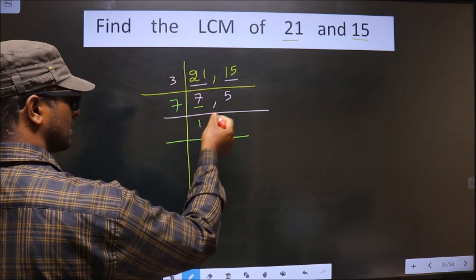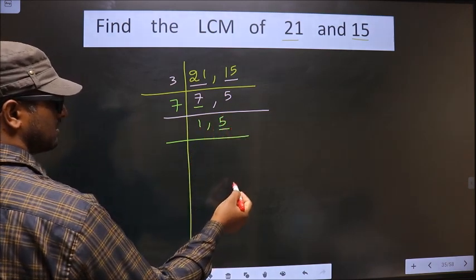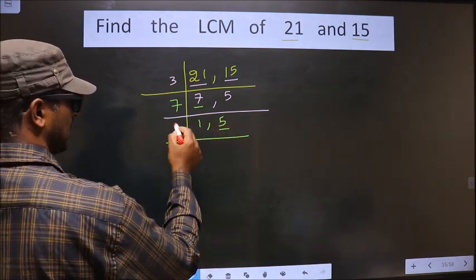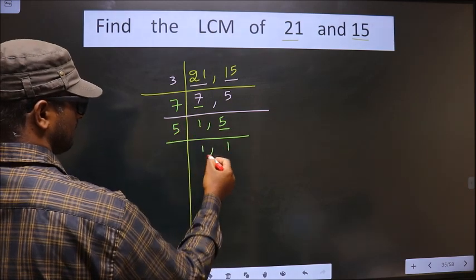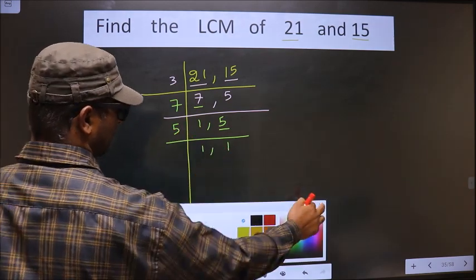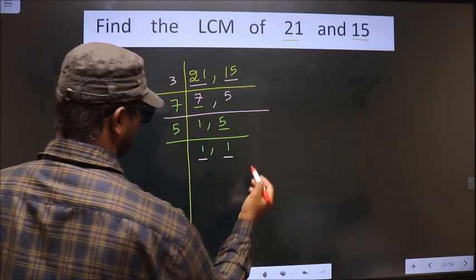Now here we got 1. So focus on to the next number that is 5. 5 is a prime number. So we take 5 here. 5 once 5. Now we got 1 in both the places.